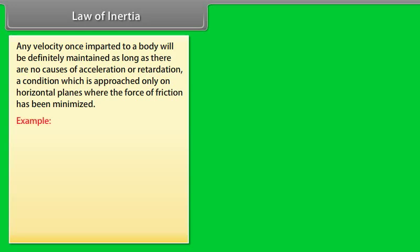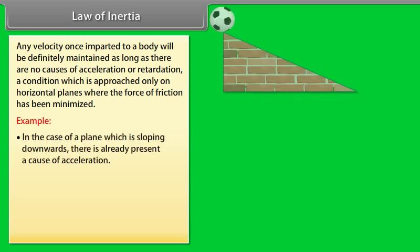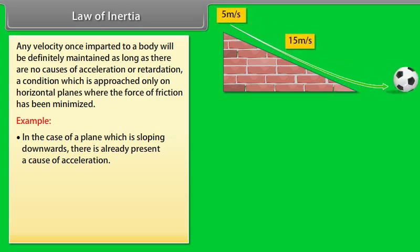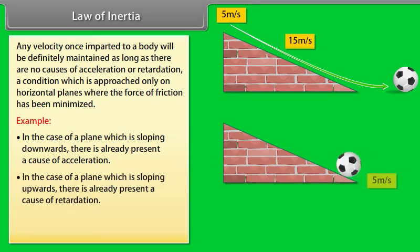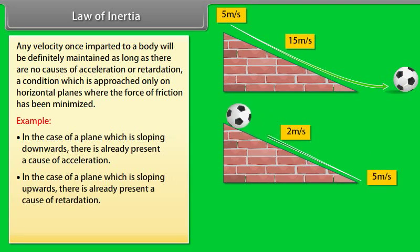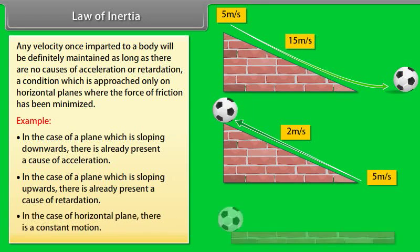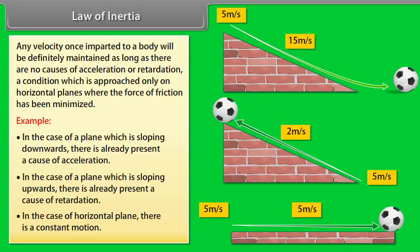Let us take an example. In the case of a plane which is sloping downwards, there is already present a cause of acceleration. In the case of a plane which is sloping upwards, there is already present a cause of retardation. In the case of a horizontal plane, there is constant motion.